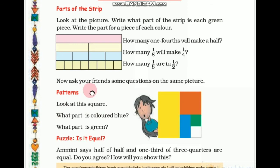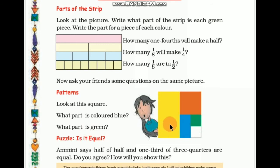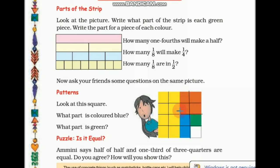Here the topic is patterns. Look at this square — what part is colored blue? Here 2 parts are colored blue, so 2 upon 16th — 2/16th part is colored blue. And what part is green? Only 1 part is colored green, so 1/16th part is green. Let's check our answer. Children, count how many total parts there are: 1, 2, 3, 4, 5, 6, 7, 8, 9, 10, 11, 12, 13, 14, 15, 16. So our answers are right.